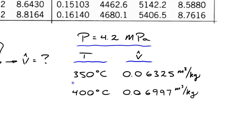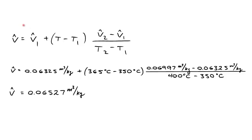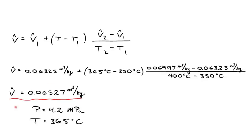There is one more interpolation to do: finding the specific volume at a temperature of 365 degrees C. Using the interpolation formula with the two specific volumes calculated in the previous steps, T1 = 350 and T2 = 400 degrees C, and inputting 365 degrees C, the final specific volume is 0.06527 cubic meters per kilogram.